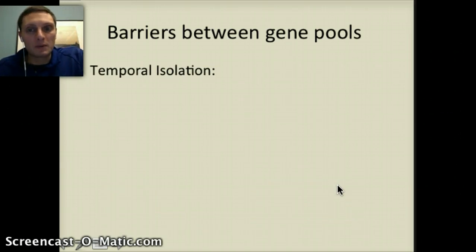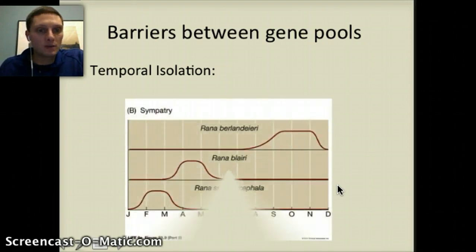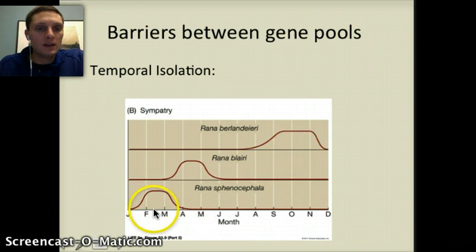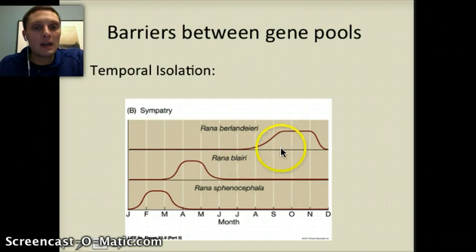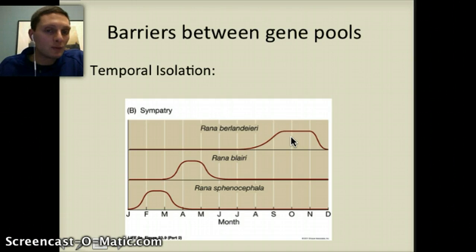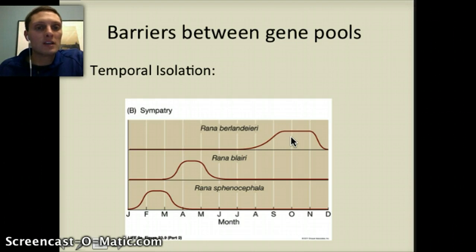The next barrier between gene pools is temporal isolation. Temporal refers to time, so we're talking about the timing of reproduction. Here we have three different species, each reproducing at slightly different times: one predominantly in February–March, one in April–May, and one from September through November. Because their reproductive habits are at different times, they're not able to reproduce with one another, which creates a barrier to gene transfer between these different species.